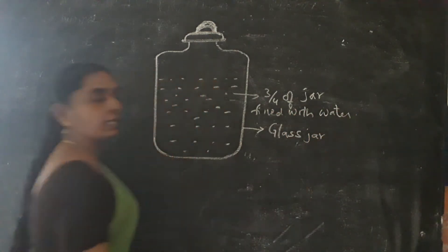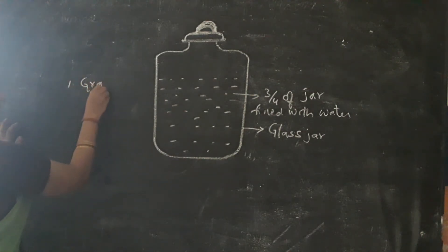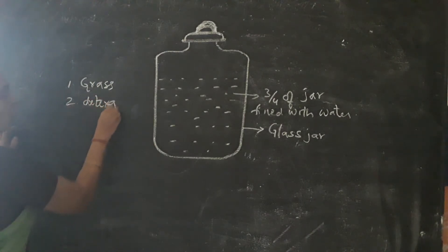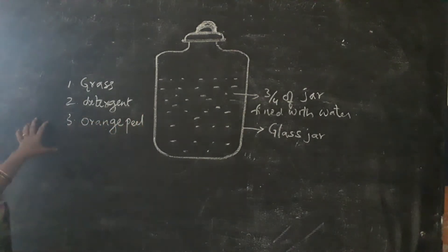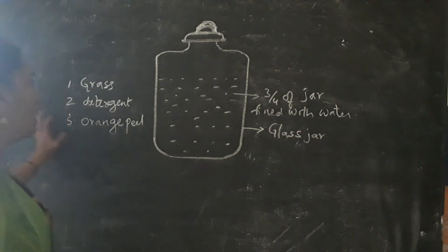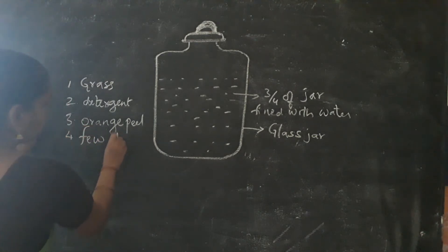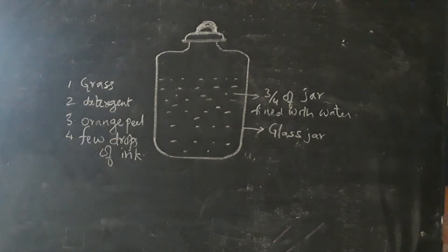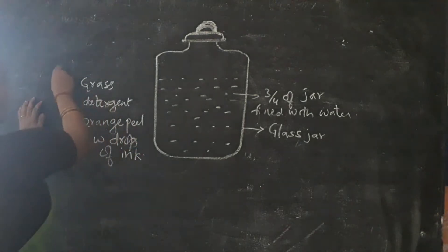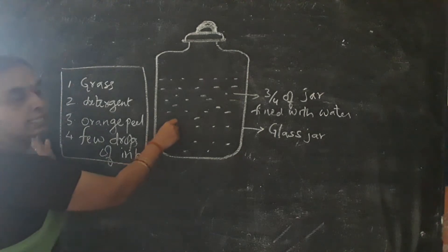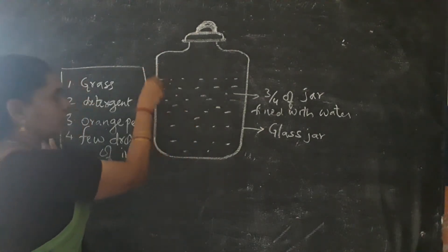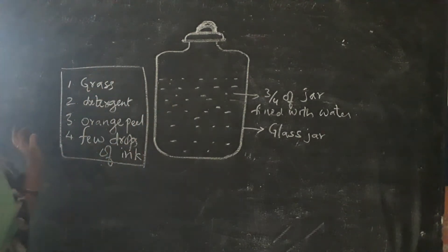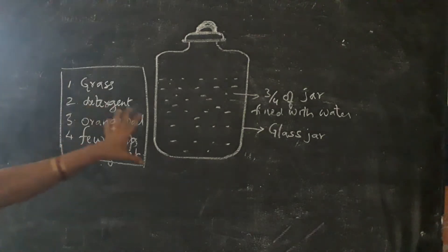Next, you are taking grass, detergent, oil, and organic matter present in your kitchen — orange peel or any used peels. You can take any of these, and add a few drops of ink. Add all this organic matter which makes the water dirty. So the jar has three-fourths of water, and you add this matter so it becomes dirty.